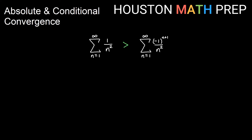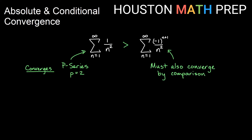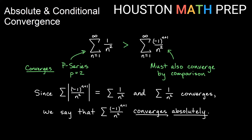Using an idea similar to a direct comparison test, we notice that the non-alternating series is a p-series with p equals 2, which is greater than 1, so it's a convergent series. And if this alternating series is less than that, and the non-alternating one adds up to some real number, then the alternating one must also converge by comparison — the fact that it's smaller than something that converges. If we take the absolute value of all the terms and that series converges, and this alternating series is smaller because some of its terms are negative, then we say that this alternating series converges absolutely.